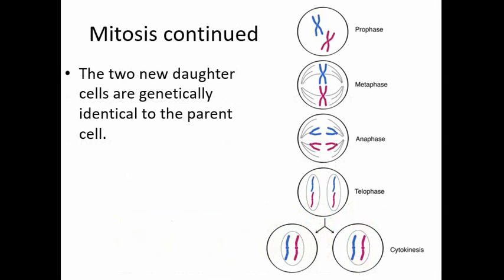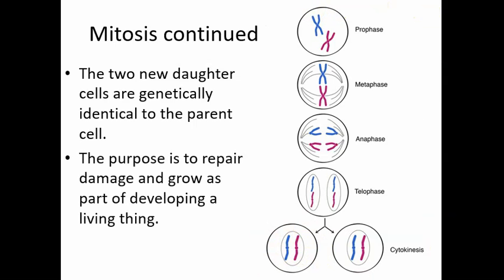The two new daughter cells that are made are genetically identical to the parent cells. We can see this in the diagram — the blue and purple chromosomes at the start of the process also appear in each of the new cells that form. These diagrams are simplified; different species have a variety of numbers of chromosomes. For example, humans have 46 chromosomes in a typical cell. The purpose of mitosis as part of cell division is that cells can repair damage — if you get a cut, you need mitosis to make new cells — and to grow as part of developing a living thing.